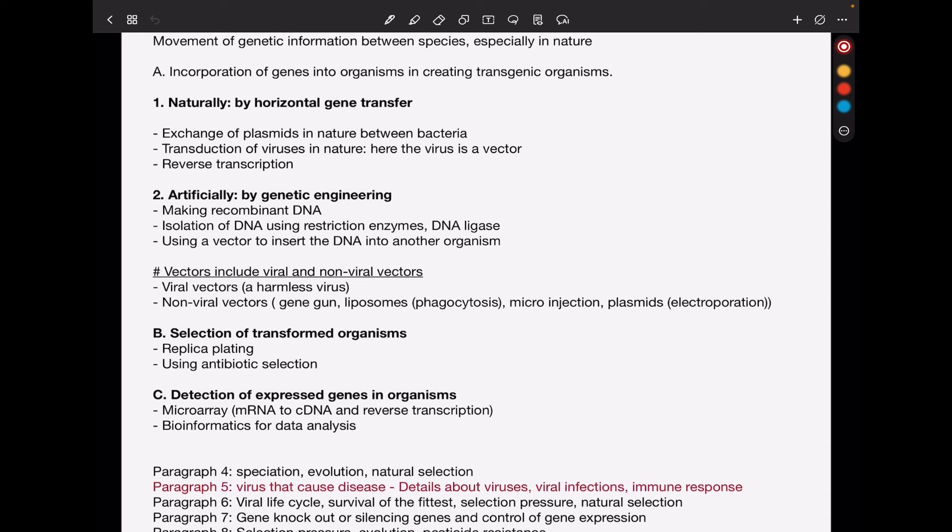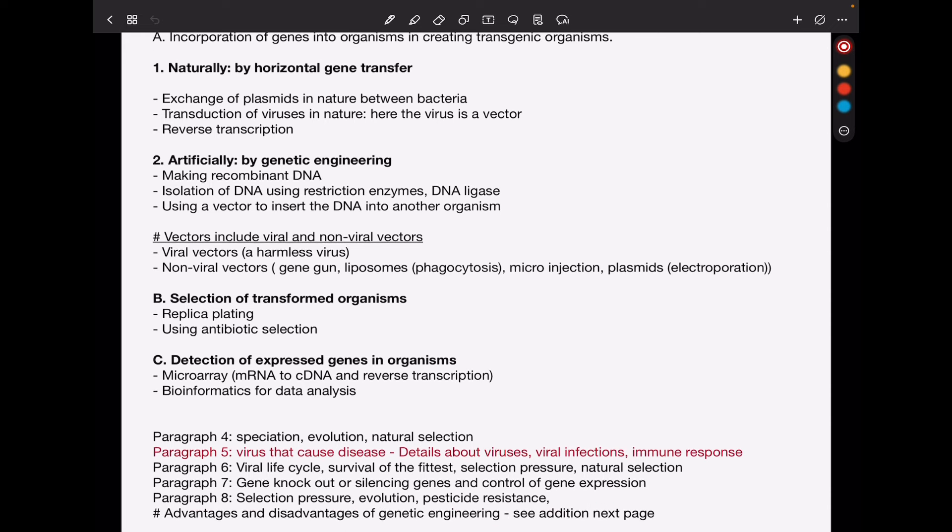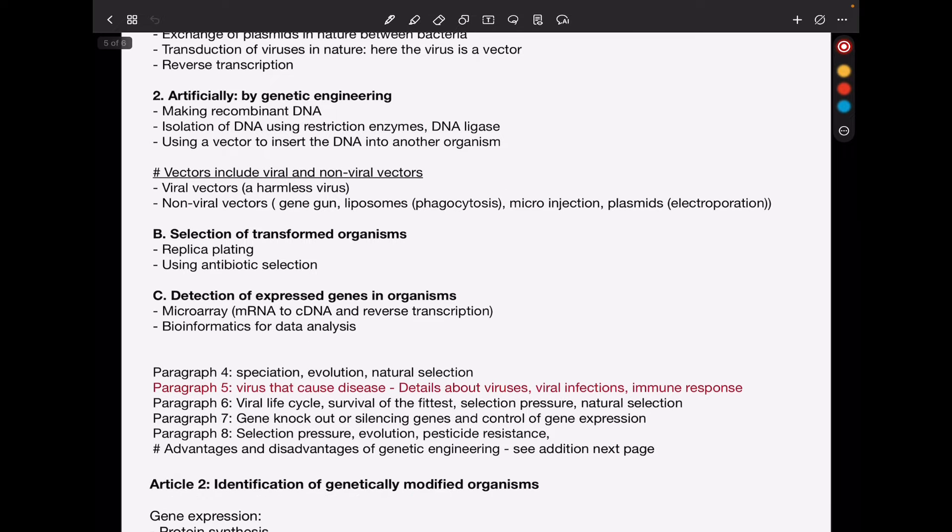Then how it occurs artificially, for example, by genetic engineering. Here, they'll ask questions about making recombinant DNA, isolation of DNA, using restriction enzymes, as well as DNA ligase. They can ask questions about using vectors to insert the DNA into organisms. In talking about vectors, remember there are two types. There are viral vectors and non-viral vectors. The viral vectors involve using a harmless virus, where the non-viral vectors include using gene guns, liposomes, microinjections, plasmids, and so on.